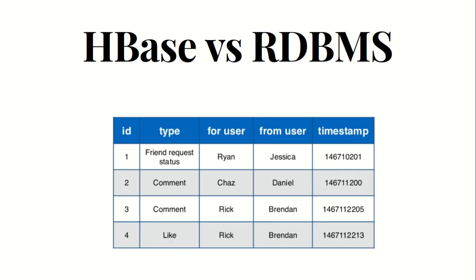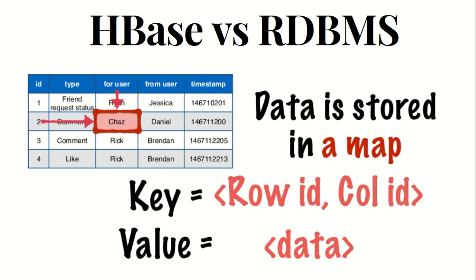If we talk about the difference or comparison between HBase and RDBMS — relational database management system — in RDBMS we represent the data in the form of a table, with rows and columns available. This is the traditional way of storing information. But in HBase, the data is stored in a map. We have one data point, which has a row ID and column ID; the intersection of those is called a cell.